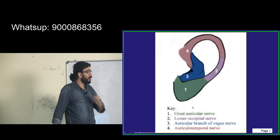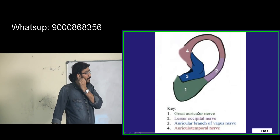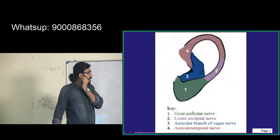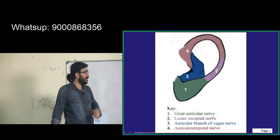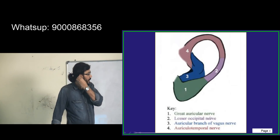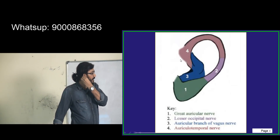The lobule is supplied by the greater auricular nerve. The greater auricular nerve supplies this entire region. The second area is supplied by the lesser occipital nerve.